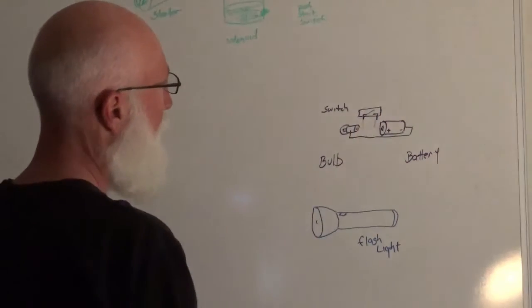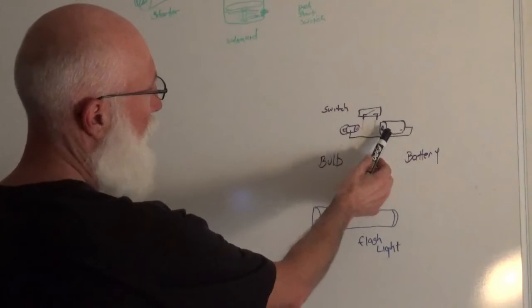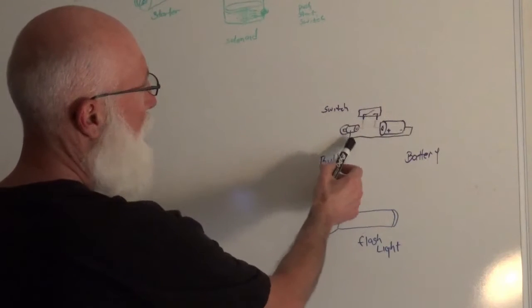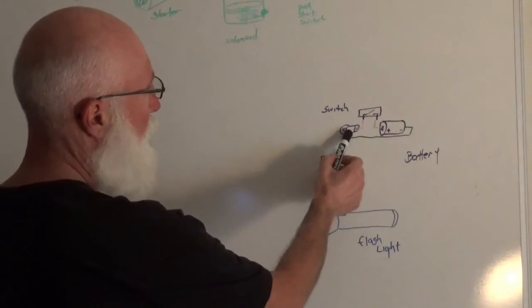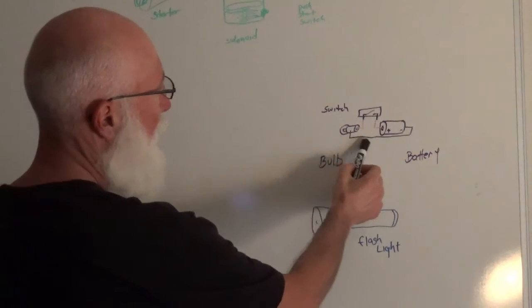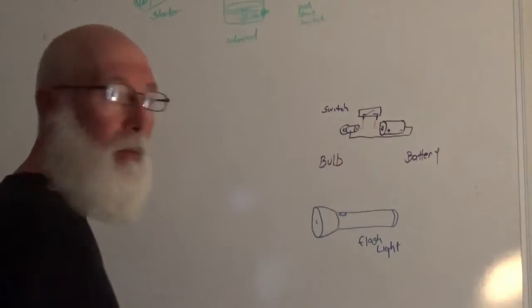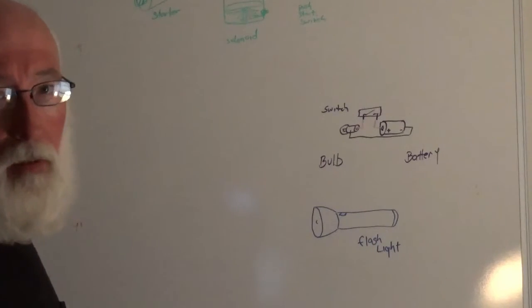Once you hit this switch, power will run from the positive part of the battery, through the switch, into the bulb. It will go through the filament and outside the base, back over to the negative side of the battery. That's pretty much how a starter circuit works.